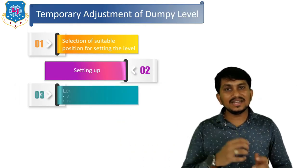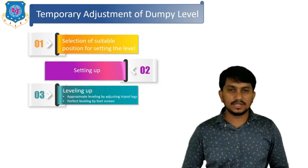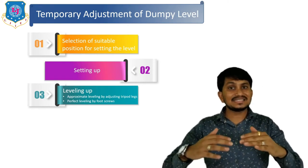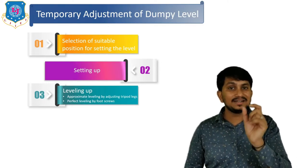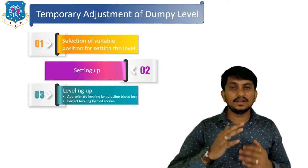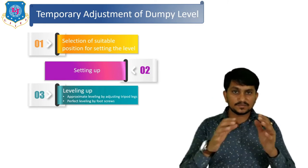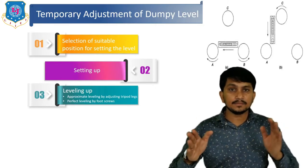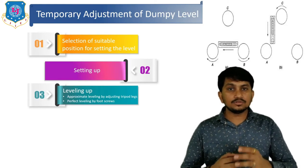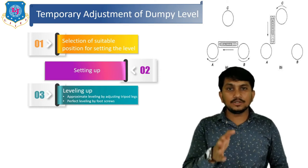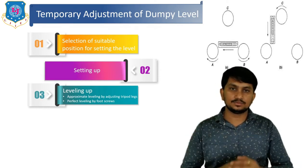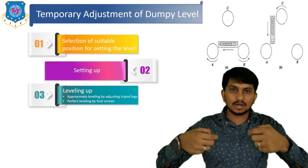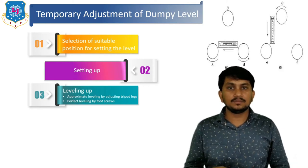The third step is leveling the instrument, which is of two types: approximate leveling and perfect leveling. Approximate leveling is done by adjusting the tripod legs to bring the bubble to the center position in the bubble tube. For perfect leveling, we use the foot screws — name them A, B, and C. Turn the telescope so the level tube is exactly parallel to the line joining A and B, then turn screws A and B inward or outward to bring the bubble to the center.